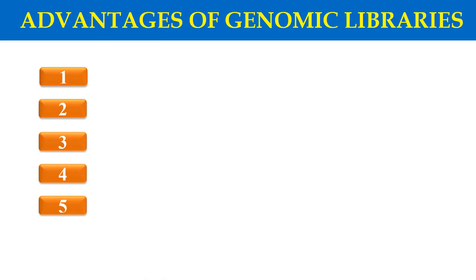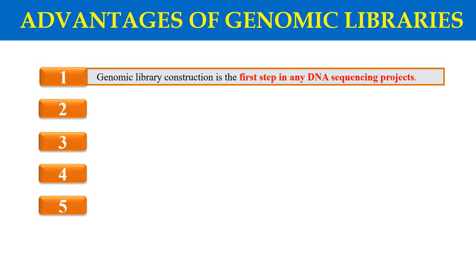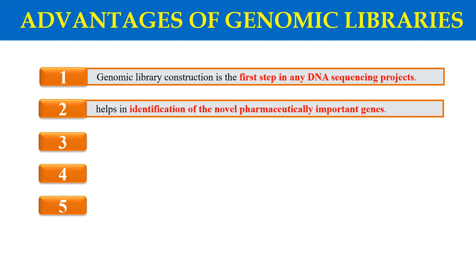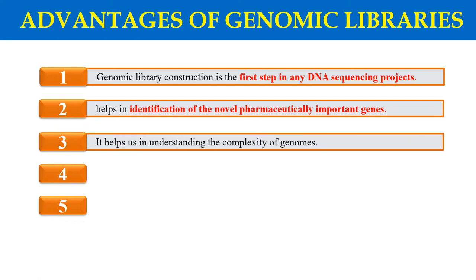By using these five steps you can construct the genomic library of any organism. Now, what are the advantages of a genomic library? First, if you want to sequence any DNA, the first step is generally the construction of the genomic library — you first construct the genomic library and then start the sequencing project. Second, it is used for the identification of new pharmaceutically important genes, using the complete genomic sequence of a particular organism. Third, it helps in understanding the complexity of genomes, since different organisms have different levels of genomic complexity, and genomic libraries allow us to study this easily.